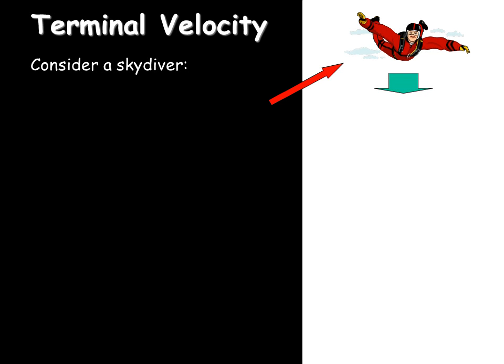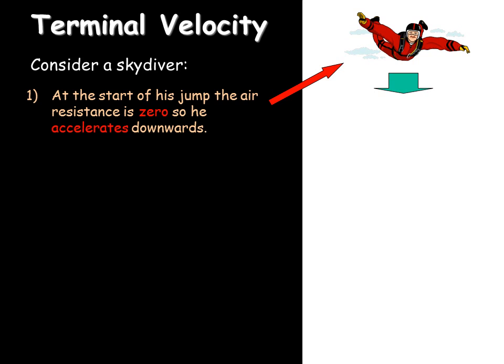We're now going to consider a skydiver, somebody jumping from an aeroplane. At first, he jumps out of the aeroplane, there's no air resistance. There is a big force acting downwards due to gravity, his weight pulling him down. So he starts to speed up, he starts to accelerate downwards.